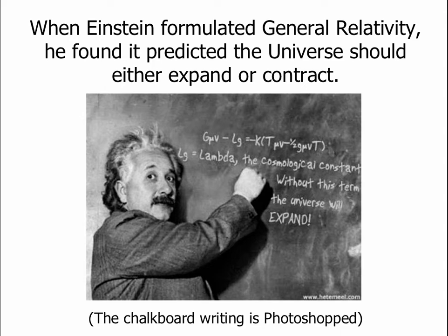Einstein introduced a term that he called lambda, which the Greek letter lambda looks like a triangle that's missing its bottom side. And this lambda would be a property of space, sort of like an extra energy. It would keep the universe from either expanding or contracting, or depending on the value, it could make the expansion faster or slower. But of course, Einstein called this thing a cosmological constant that would keep the universe static, which is what all astronomers thought should happen at the time.